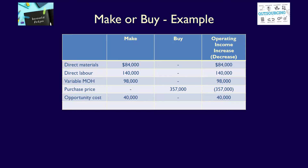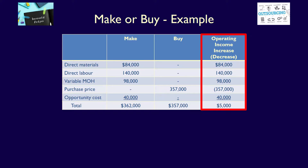If we total all the columns, the make column now has a total cost of $362,000, the buy column $357,000, and the change in operating income is an increase of $5,000. The company's operating income will increase by $5,000 if the company decides to buy the component. The company, given this information, should switch to buying the component because of the savings of $5,000 in operating income.